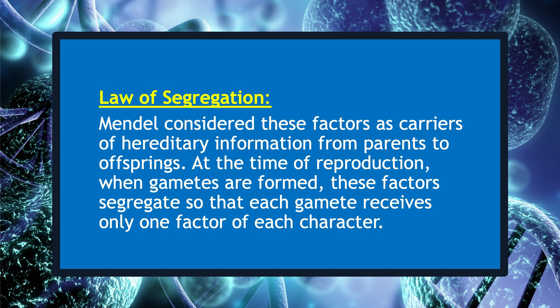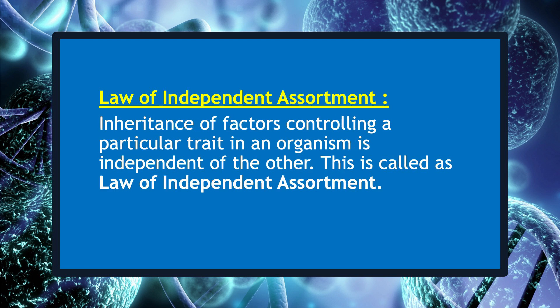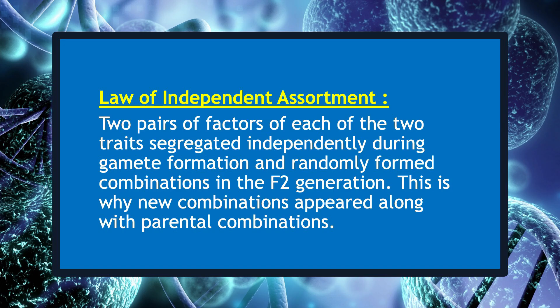At the time of reproduction, when gametes are formed, these factors segregate so that each gamete receives only one factor of each character. This is known as the law of segregation. Inheritance of factors controlling a particular trait in an organism is independent of the other. This is called the law of independent assortment. At the time of reproduction, two pairs of factors for the two traits segregate independently during gamete formation and randomly form combinations in the F2 generation.